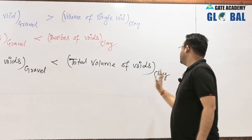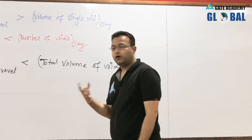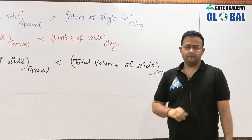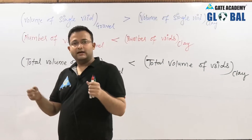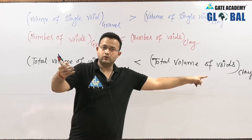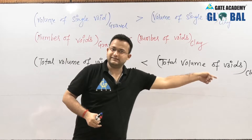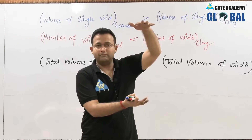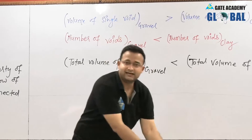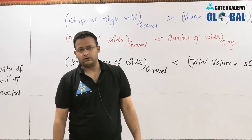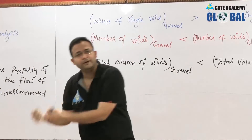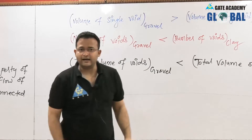Now this raises a question. The total volume of voids in clay is more than in gravel. According to my earlier statement, more voids means more permeability. So the permeability of clay should be higher than gravel. But that does not happen — gravel still drains water first. In clay, even though the volume of voids is very high, the permeability is less. In gravel, the volume of voids is less, yet the permeability is high. How is this possible?